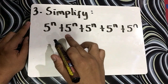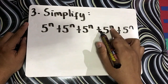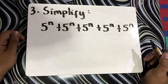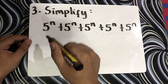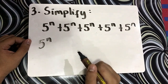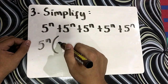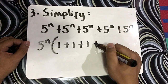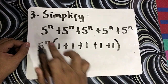Simplify: 5 raised to n, plus 5 raised to n, plus 5 raised to n, plus 5 raised to n, plus 5 raised to n. First step, we need to get the greatest common factor. Our GCF is 5 raised to n, times the quantity 1 plus 1 plus 1 plus 1 plus 1, which gives us 5.